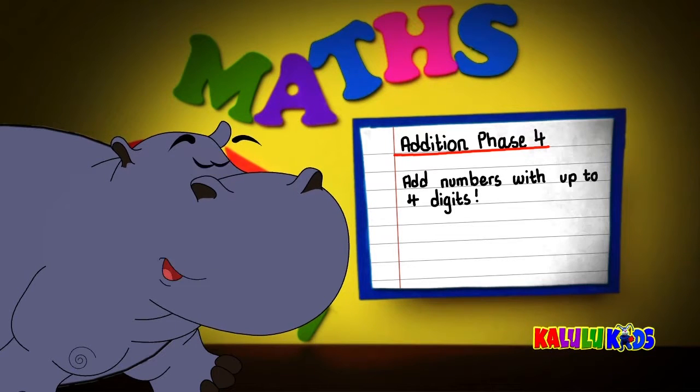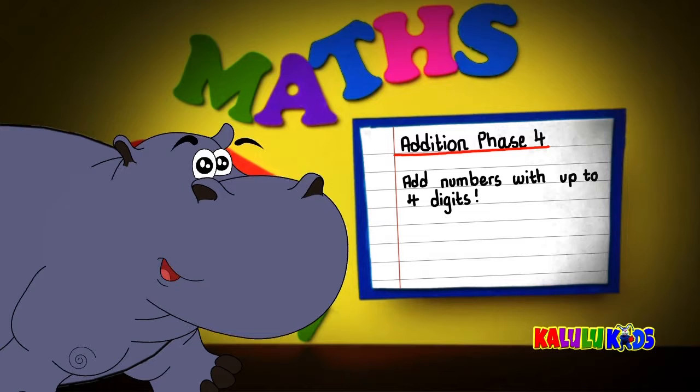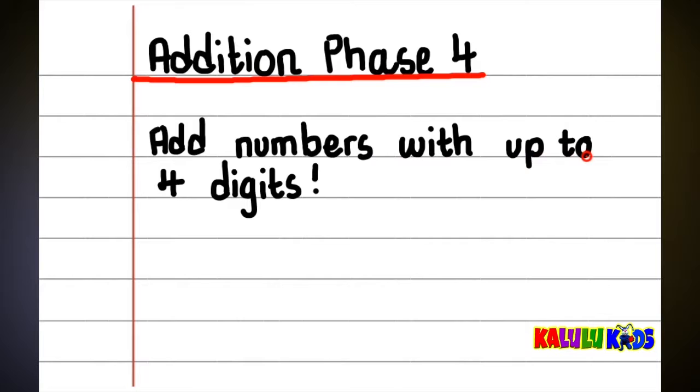Addition Phase 4. By the end of this lesson, you should be able to add numbers with up to 4 digits.